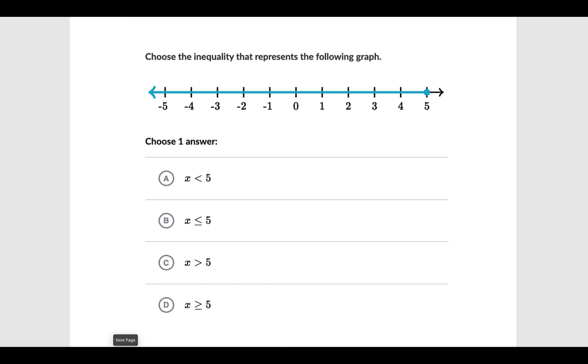So here's an example. Choose the inequality that represents the following graph. So first thing is note that it's at number 5. All of your answer choices are at number 5. It is also filled in, so it's going to be equal to.